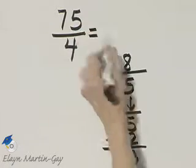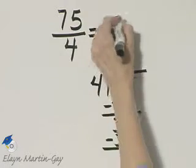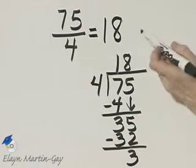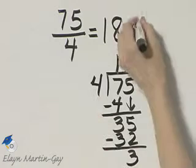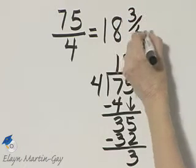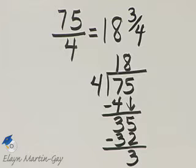Now let's write down our mixed number. This is the whole number part, 18. Then we write the fraction part as the remainder over the divisor, so that would be 3 fourths. The mixed number is 18 and 3 fourths.